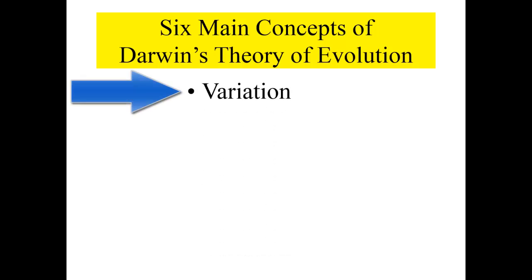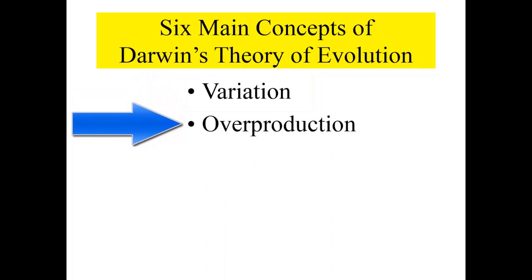The first concept is variation. Not all individuals in a population are genetically identical. Variation occurs through the process of gene mutation and also through the recombination of genes during sexual reproduction.